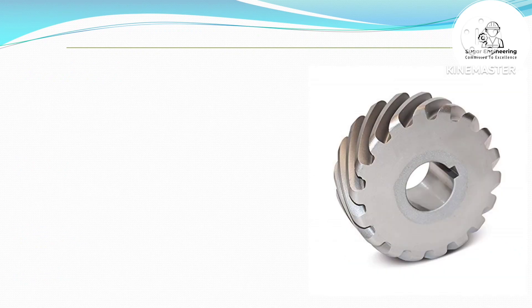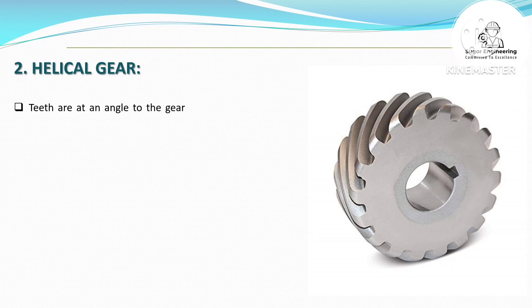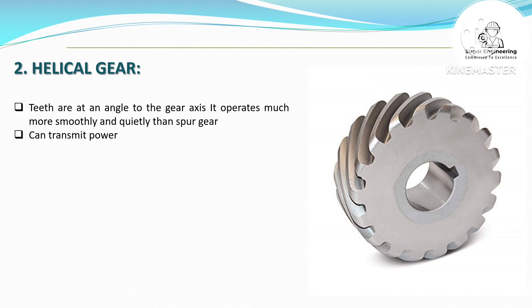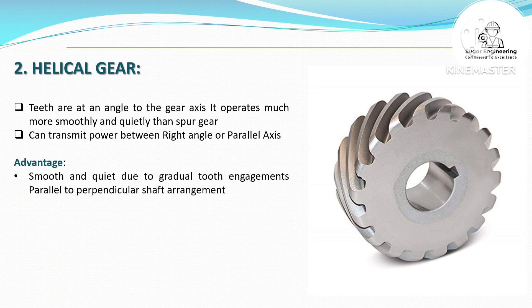Helical Gear — teeth are at an angle to the gear axis. It operates much more smoothly and quietly than a spur gear and can transmit power between right-angle or parallel axes.